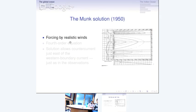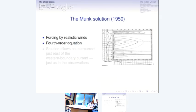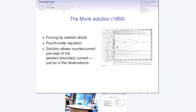Two years later in 1950, Walter Munk brought in forcing by realistic winds, and he had more realistic friction. So he had a fourth-order equation. Now he can satisfy two conditions on the east and two conditions on the west. So he can satisfy the no-normal-flow into the boundary — which Sverdrup could do only at the eastern boundary, and Stommel could do at the eastern and western boundaries. But now since he has Laplacian friction, he can satisfy the no-slip condition at the eastern and western boundaries. So he has a fourth-order equation — you basically end up by doubling the order because you have friction terms for both U and V. And he ends up with a fourth-order equation, and this solution is fairly realistic. It allows the counter current, that is the equatorward flow, to exist just east of the western boundary current, just as you see in the observations.